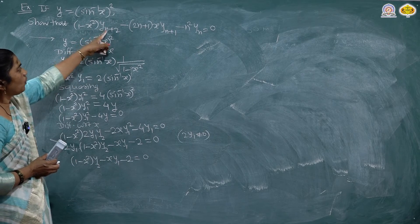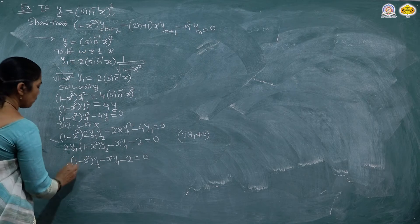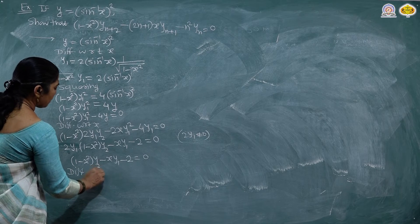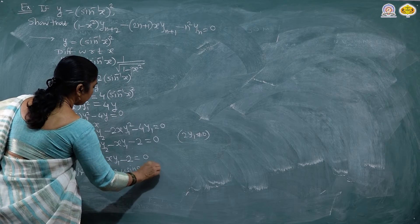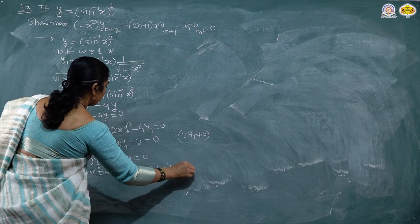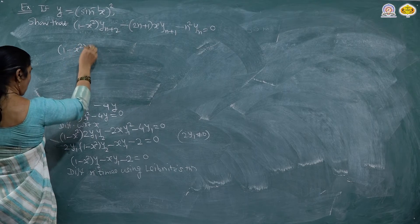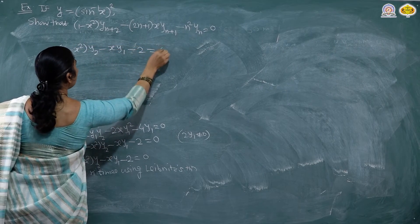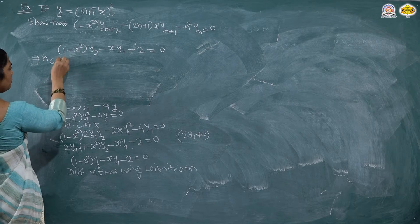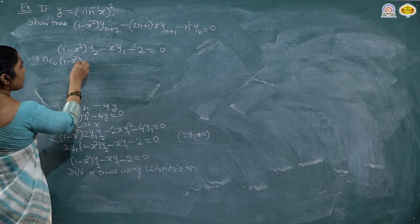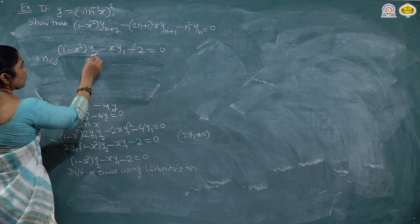So we will differentiate this n times to get y(n+2). Now differentiate n times using Leibniz theorem. Our equation is (1 - x²)·y2 - x·y1 - 2 equal to 0, and we differentiate this n times. By the theorem, we find the nth derivative of (1 - x²)·y2. Here there are two terms: (1 - x²) and y2. When applying Leibniz theorem, we take the second function v such that its derivative vanishes, and u is such that we can find its nth derivative.